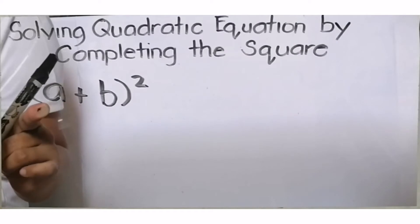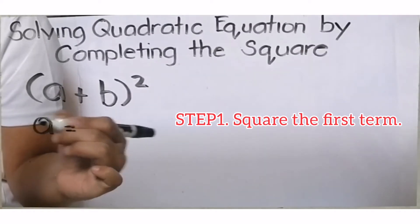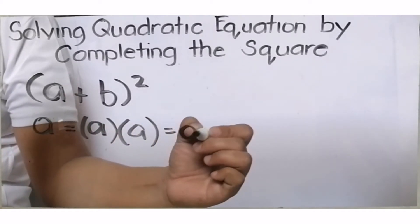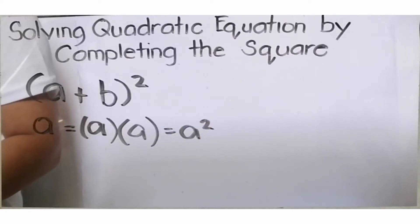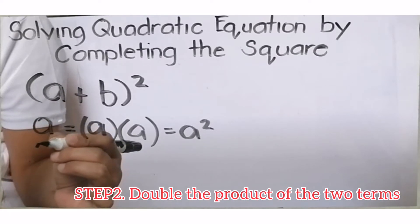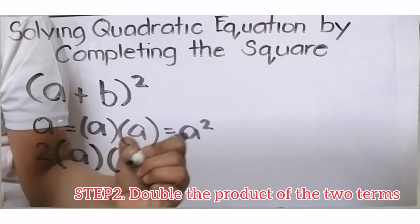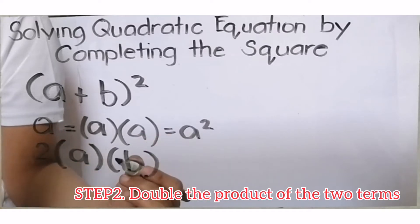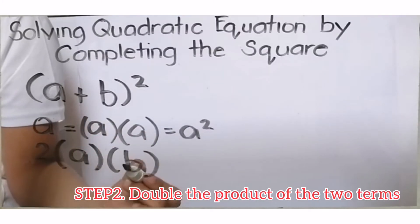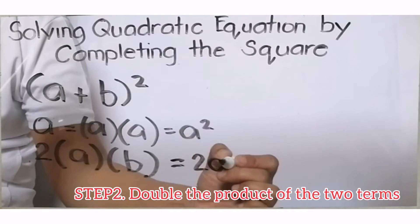First step, square the first term. When we square a term, we are actually multiplying it by itself, so the answer will be A squared. Then, double the product of the two terms. That's step 2. Double the product of the two terms means 2 times A times B, including its sign. Since it's positive, multiplying it will give us 2AB.